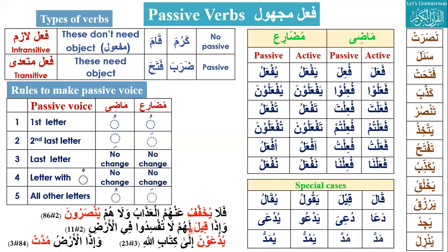Second example: 'Wa izaa qeela lahum laa tufsiduu fil ard.' Qeela is passive voice — active is qala (he said), passive qeela means 'it is said.' Lahum means 'for them,' laa tufsiduu — 'do not cause corruption in the earth.' So: 'And when it is said to them: do not cause corruption in the earth.'